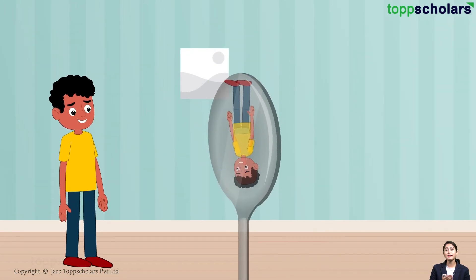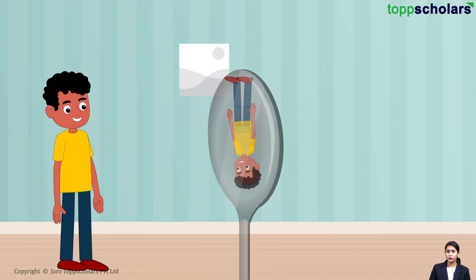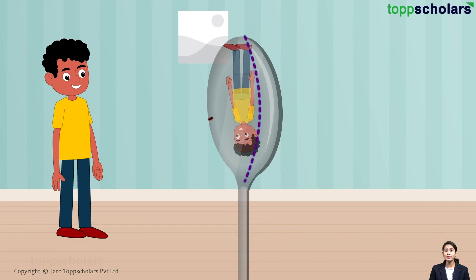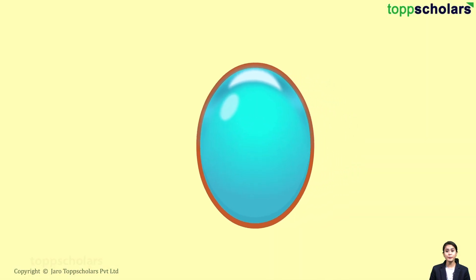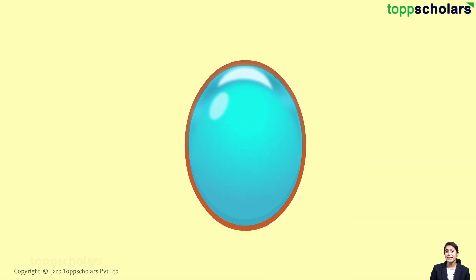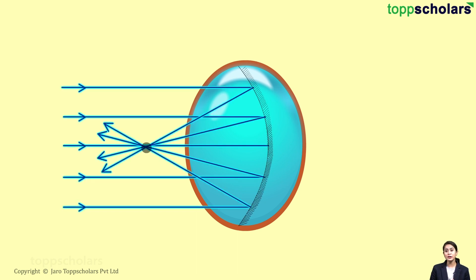The surface of the spoon is curved inwards both from the top to bottom and side to side. Thus, a spoon acts as a concave mirror. A concave mirror is a mirror whose reflecting surface is curved inwards. Being curved inwards, it reflects or bounces back the light rays in a different manner.